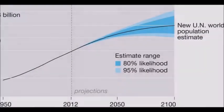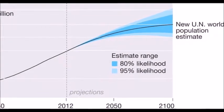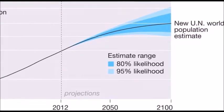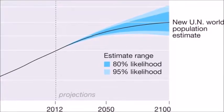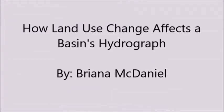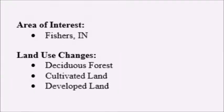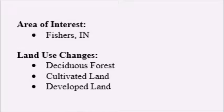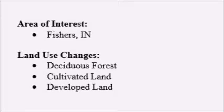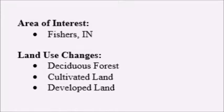As human population continues to grow, with projections of 9.7 billion by 2050, lands will continue to be developed. We will focus on the changes that occurred in one geographical area over the years. The area of interest for this activity is Fishers, Indiana.